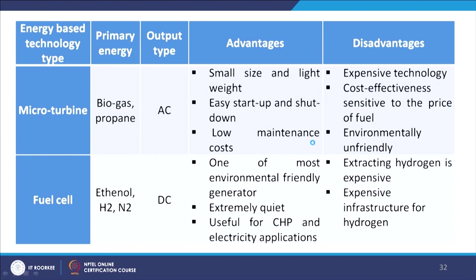The micro turbine concept uses either biogas or propane with an AC output type. Advantages are small size and lightweight, easy start-up and shut-down, and low maintenance cost. The disadvantage is that it is quite expensive technology, cost effectiveness relative to fuel price is not appropriate, and it is environmentally unfriendly.